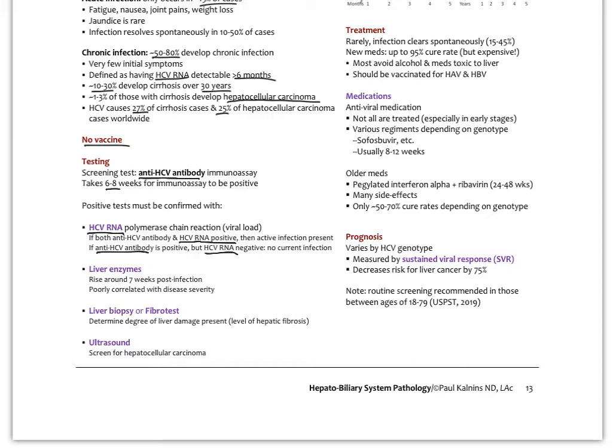Liver enzymes rise around seven weeks post-infection. Unfortunately, they're poorly correlated with disease progression. They're usually just an indicator of your immune response. That varies over time. That's not a great marker for assessing the amount of liver injury. What we're doing now is either liver biopsies or what's called the fibro test or fibrosure test in patients to assess the level of fibrosis, especially in more chronic hep C, if they've had it for many years and especially if they're becoming symptomatic.